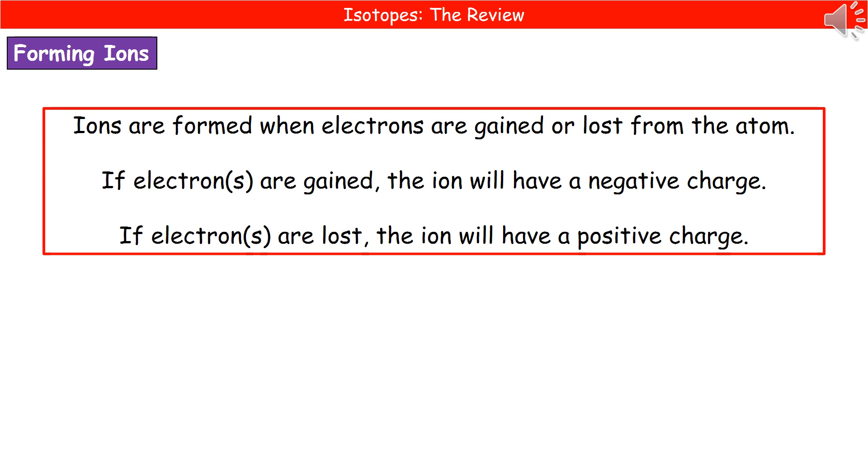So hopefully at the end of this video, you do know those key terms that we use on the periodic table of atomic number and mass number, what they represent and how we can actually use them to work out the number of protons, electrons and neutrons that are present in any given element. And that you also know what an isotope is.